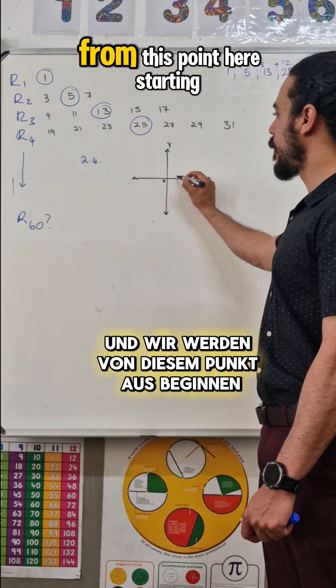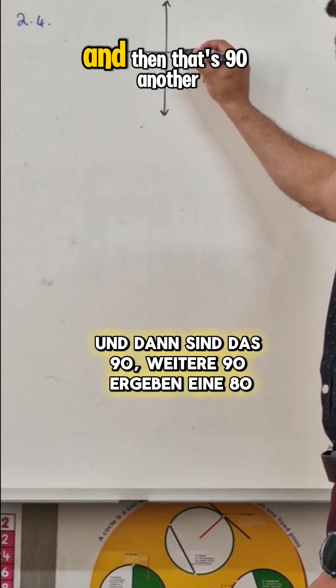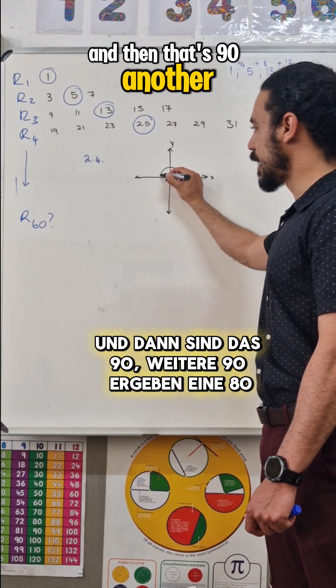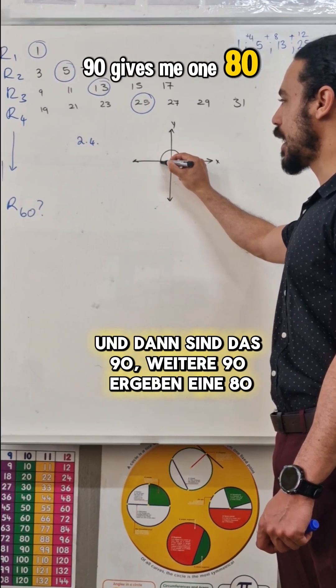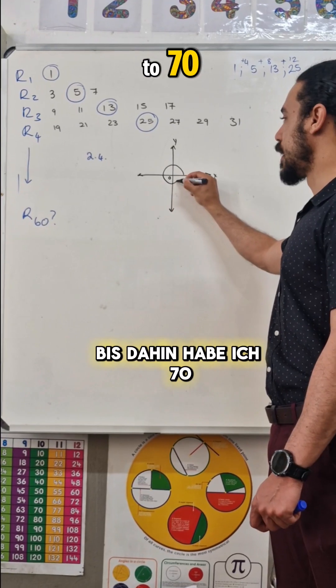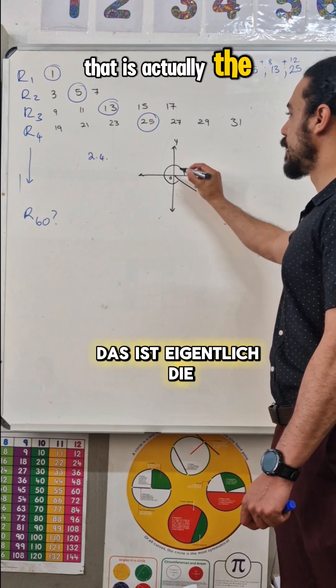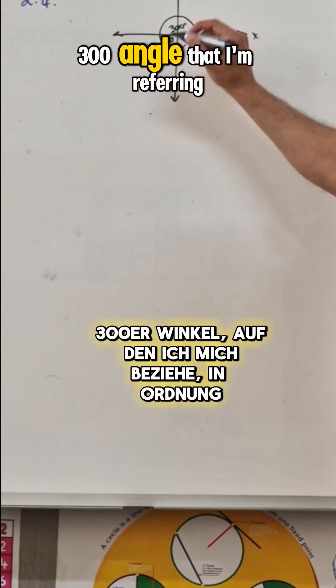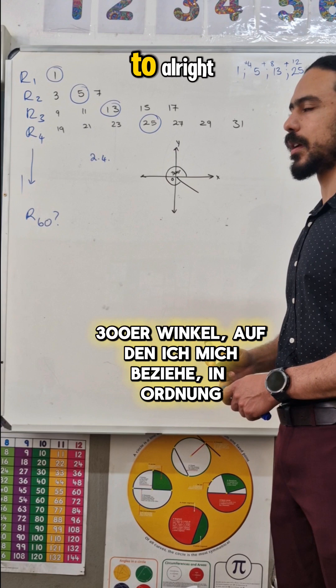We're going to go from this point here starting, and then it's 90, another 90 gives me 180, up until there gives me 270, so that is actually the 300 degree angle that I'm referring to.